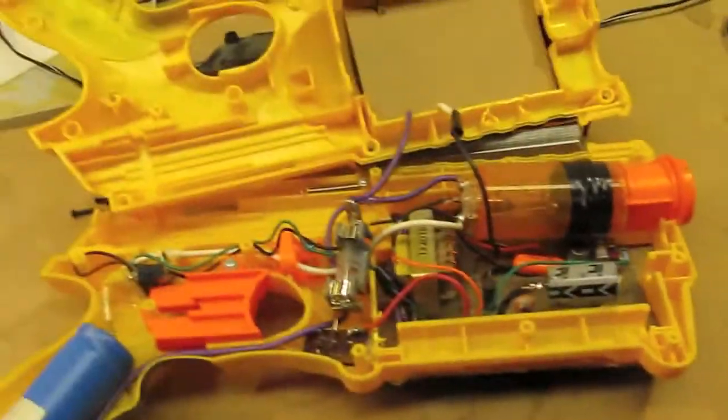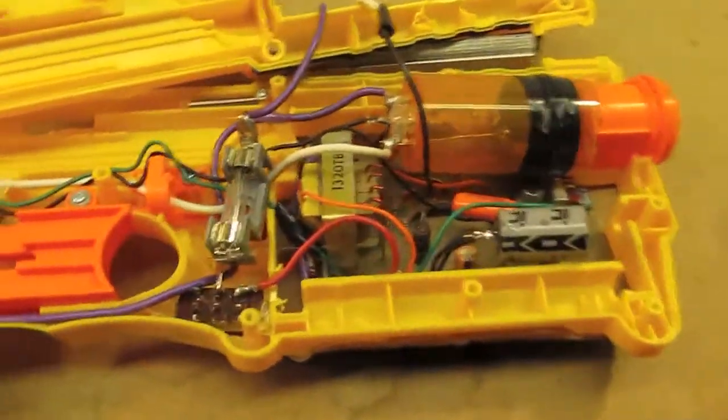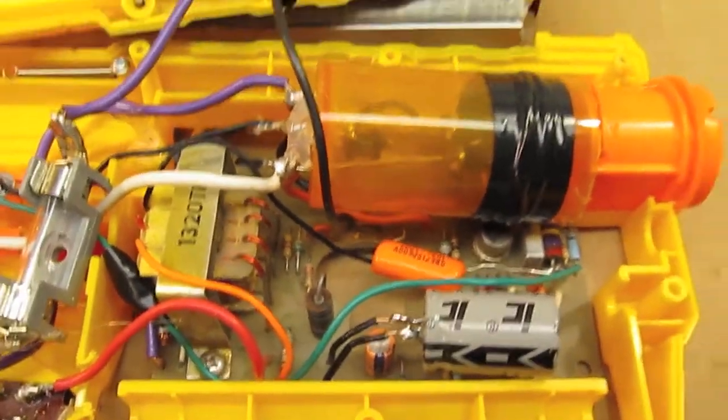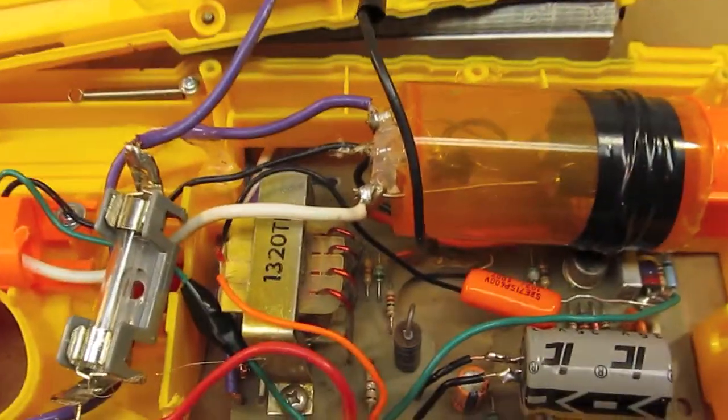All right. Case is off and here are the internals. Down there is the board for the strobe light.